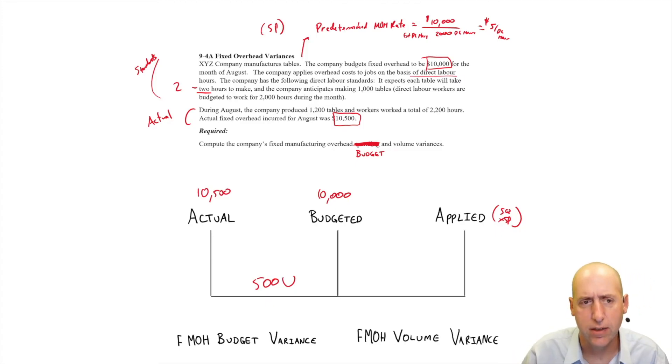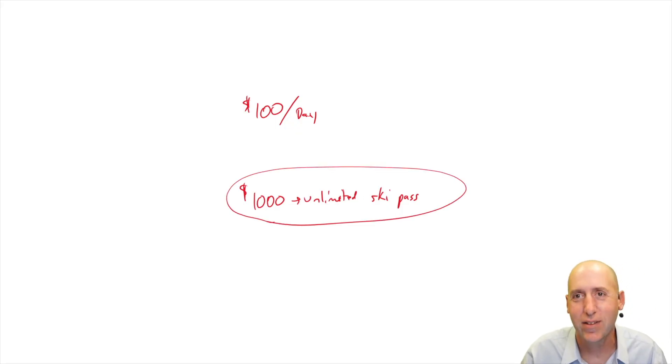Now the fixed overhead volume variance, I kind of want to explain it by giving you an example from my real life. So I like to ski. I live in Canada and I live in a town that's near a ski resort. To ski there costs $100 per day. But if you buy a pass, unlimited skiing costs $1,000. I'll never forget one year was the year I had a baby, I bought the ski pass, and I hardly went skiing at all. I went like three times. So at the end of the year, oh my god, I paid $1,000 for this ski pass that I used three times.